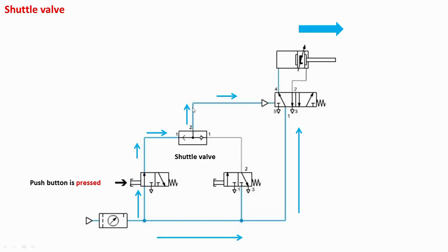A pressure signal is generated at port two, and through the pilot line this operates the five-by-two direction control valve, putting it in left envelope mode. Air moves further and through port one enters port four, causing the advancement of the piston — the forward stroke is completed. Air from the other side enters port two and is exhausted through port three.